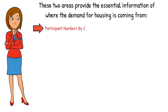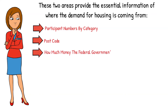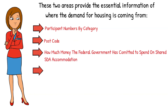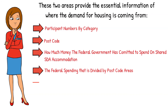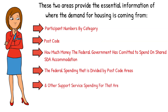Participant numbers by category, the postcode, how much money the Federal Government has committed to spend on Shared SDA Accommodation, the federal spending divided by postcode areas, and other support service spending for that area under the NDIS program.